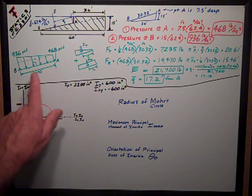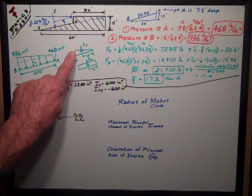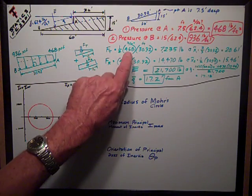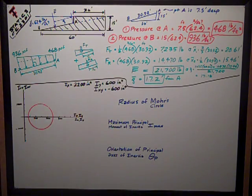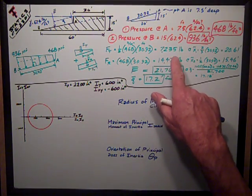What we have is a triangle and a rectangle. For the triangle part, the height is 468, one half because it's a triangle, and its length or its base is 30.92 feet, which equals 7,235 pounds.